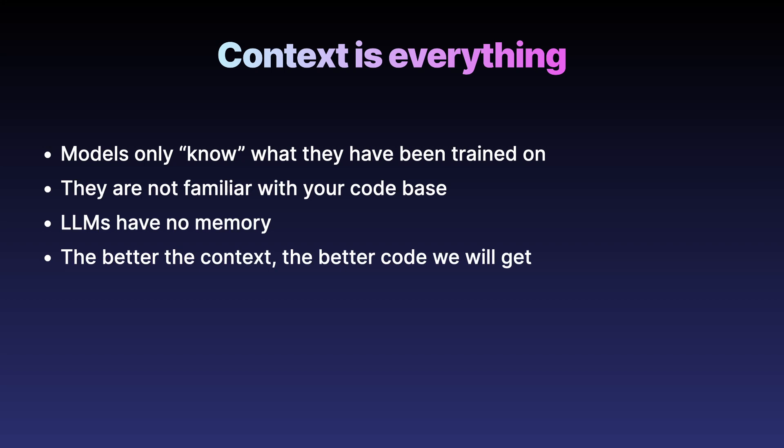One of the most important principles is context. Context is everything in Vibe Coding. The models only know what they've been trained on. They don't know your code base, new frameworks, or your specific project. All that needs to be provided in the context we give them. Context is basically all the information we send to the model alongside the prompt. LLMs don't have real memory, so we need to keep that memory alive ourselves. The better context we provide, the better code we will get. But note: the longer the context, the worse the performance.